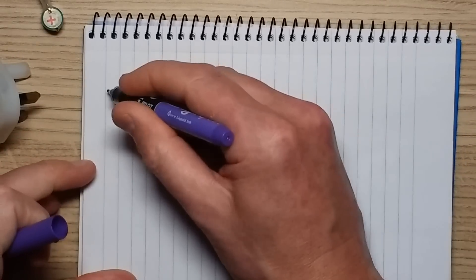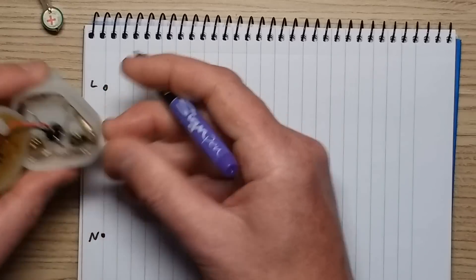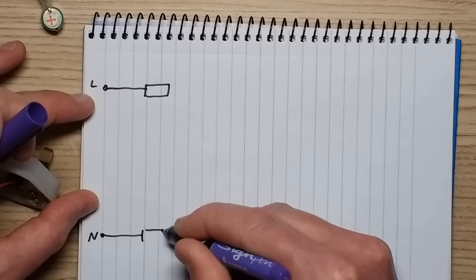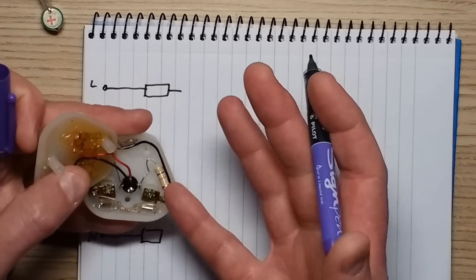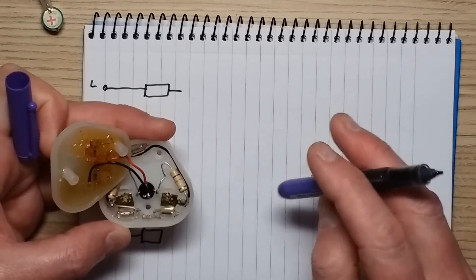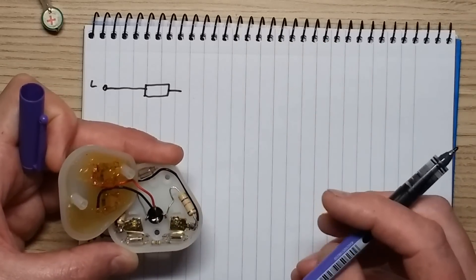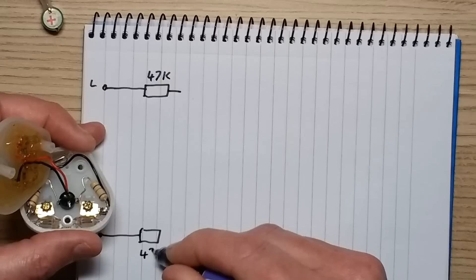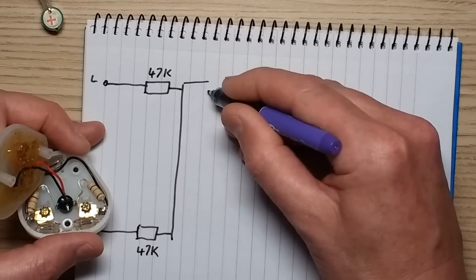It starts off with the mains coming in, let's call that live, let's call that neutral. Aside from the fact it's got the resistors feeding the bridge rectifier, I put a resistor on each leg just as a precaution, just in case there was a polarity reversal issue. It means that the resistor value is half what it could have been if it was guaranteed. 47k, 47k, so the best part of about 100k.